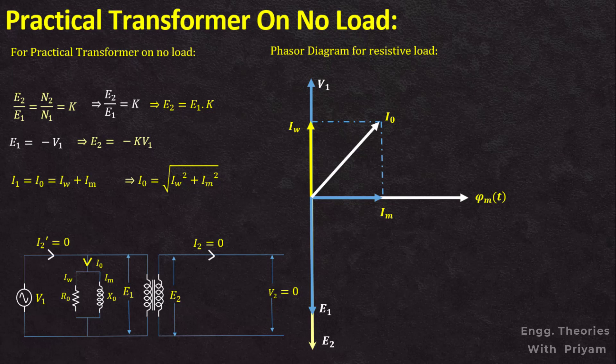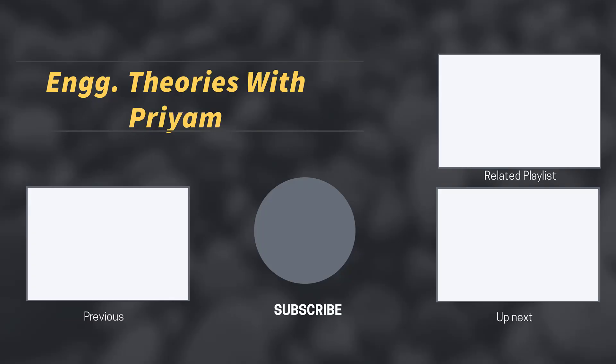The primary current I1 equals I₀. Since the shunt branch is not purely inductive in nature, this current I₀ lags the supply voltage V1 by an angle less than 90 degrees, equal to φ₀. As there is no load connected in the secondary winding, the current flowing through the secondary winding I2 is also equal to zero.